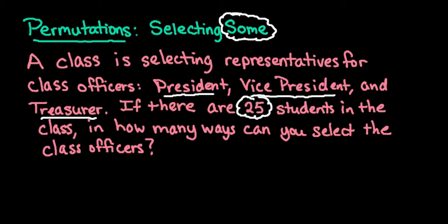So the reason order is important in this one is because being president is different than being vice president. So let's say for example you had three students: Olivia, George, and John. Olivia being president would be different than George being president, and the same for vice president and treasurer. So that's why it's a permutation, because the order matters.